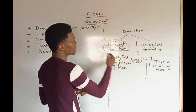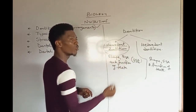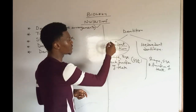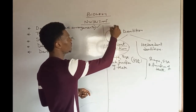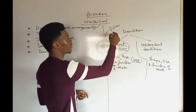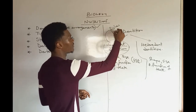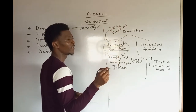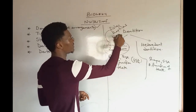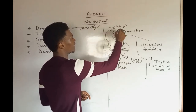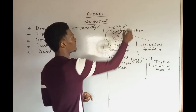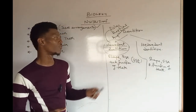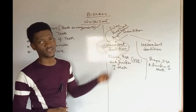Looking at the world of vertebrates, the organisms that possess homodont dentition include the fishes, the reptiles, and the amphibians. These are vertebrates that tend to possess homodont dentition.